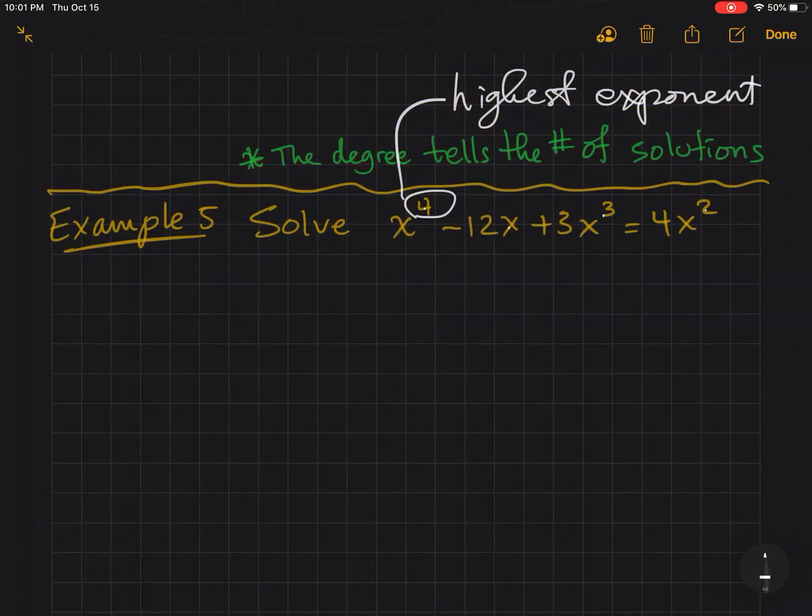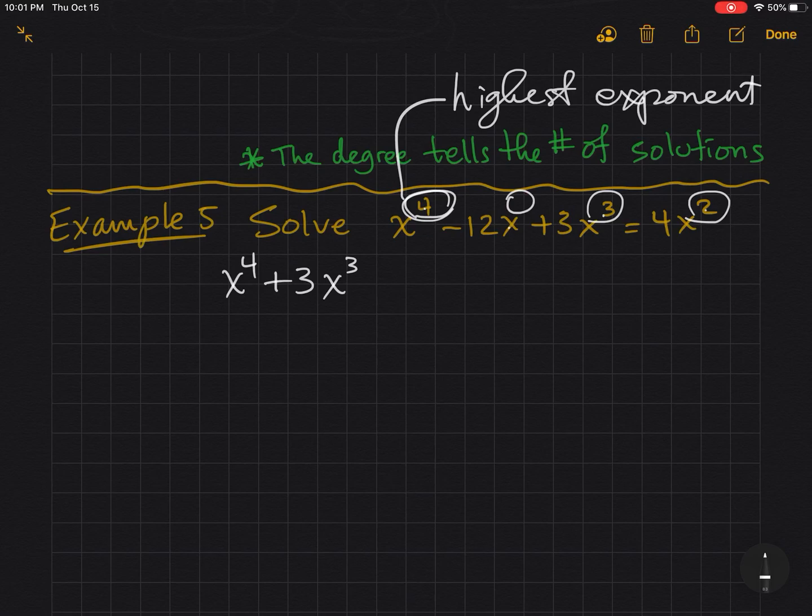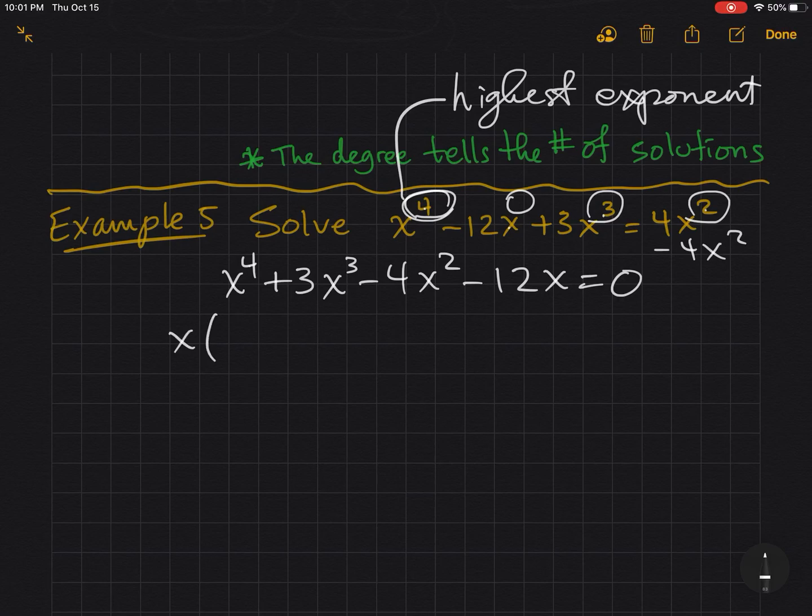In order to solve this equation, I'm going to put everything on the same side, and I'm going to put the exponents in descending powers. So, I'm going to go 4, 3, 2, 1, like that, to make sure everything is nice and neat. I'm going to bring this over by subtracting 4x squared from both sides, and then I have a minus 12x equals 0. So, now, I'm in a nice order. I need to factor this. Do I have a GCF? Yes. You always look for the GCF first when factoring.